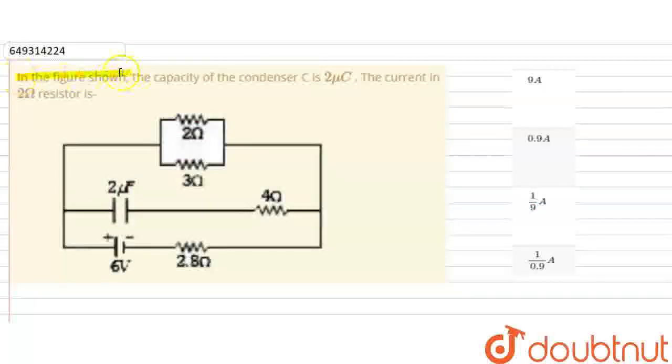Hello students. The question is: in the figure shown, the capacity of the condenser C is 2 microfarad. The current in the 2 ohm resistance is what?